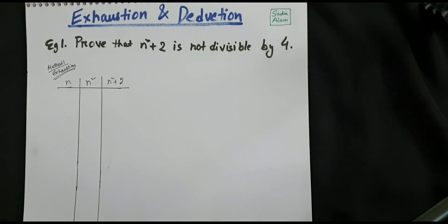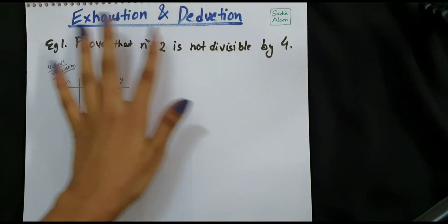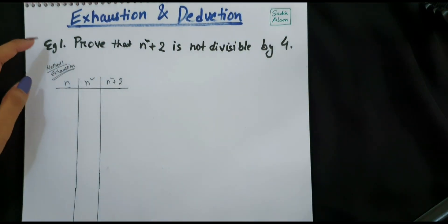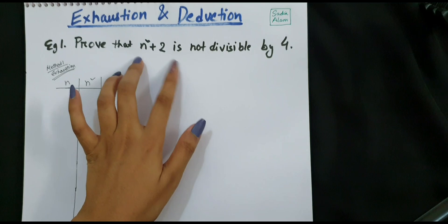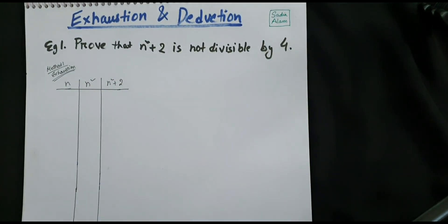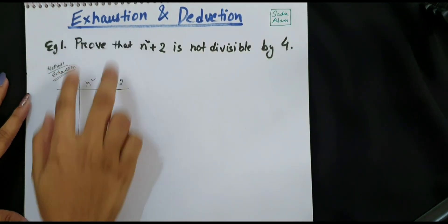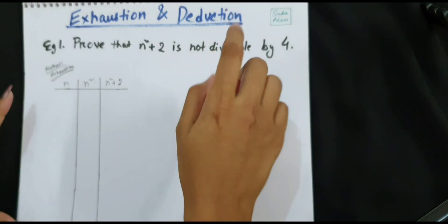In this video I will try to explain how to prove a statement by two different methods: exhaustion and deduction. For example, we need to prove that n squared plus 2 is not divisible by 4. First I will try to prove it by the method of exhaustion, and then we will see how to do that using deduction.